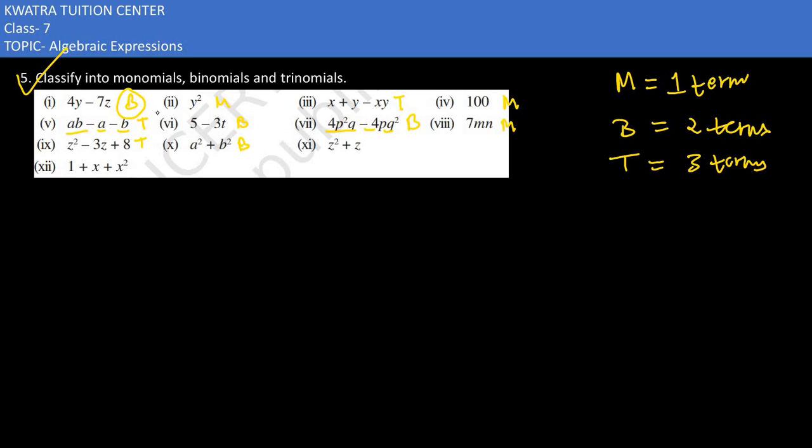In the tenth case, you would have a binomial because the plus sign is in between. In the eleventh part, you have z² + z, so it would have two terms in it, and it would be a binomial.